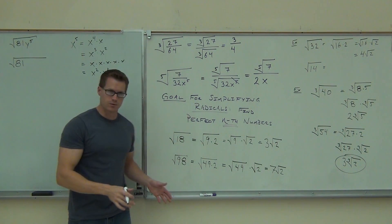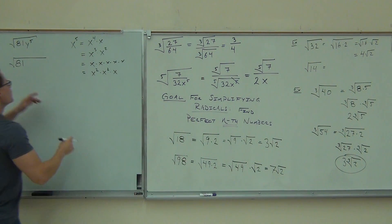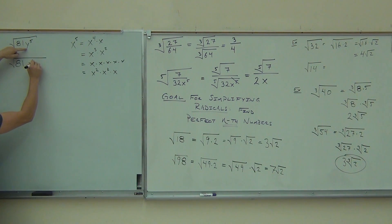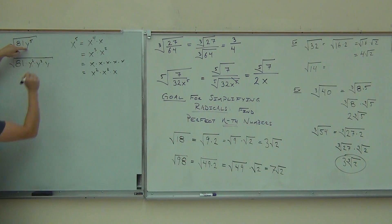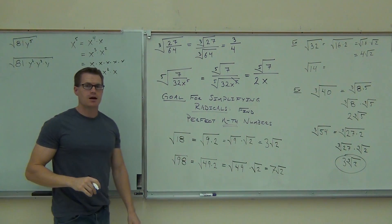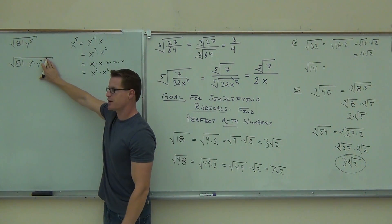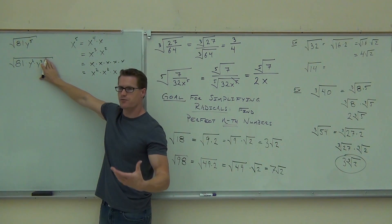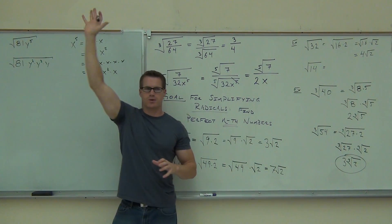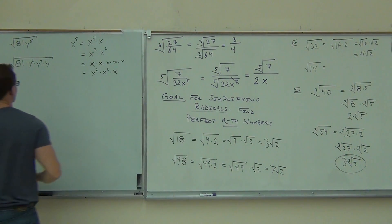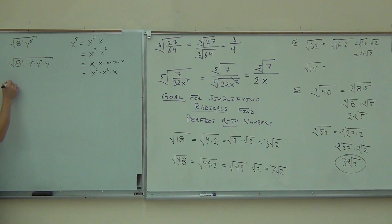If you can take the square root of a number perfectly, leave it alone. But y to the fifth — instead of leaving it as y to the fifth, I'm going to write this as y squared times y squared times y. As many y squareds as I can, but I still need y to the fifth. I can't just leave it as y squared times y squared, because that's only y to the fourth.